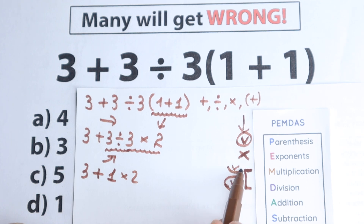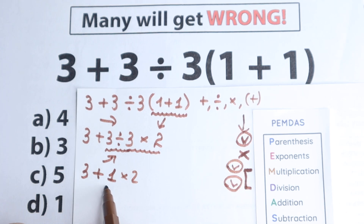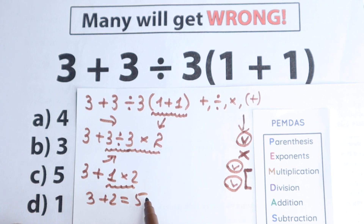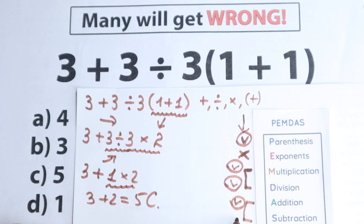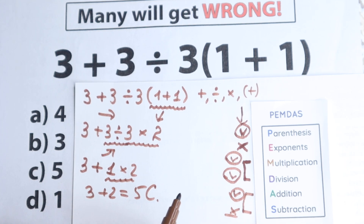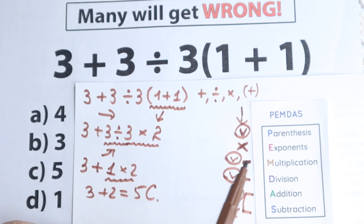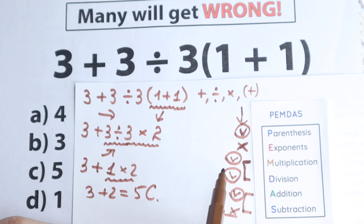We need to solve multiplication next: 1 times 2 equals 2, and we have 3 plus 2. Then the last step is addition — 3 plus 2 equals 5. So the answer is option C. We completed the multiplication step and the addition part. The first step was parentheses, then multiplication and division from left to right — in our case division first — and the last step was addition.